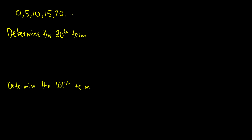So let's say we have a sequence that looks like 0, 5, 10, 15, 20, and it seems to be going up by 5 every single time. We're asked to determine the 20th term. Each one of these numbers is a term. So 0 is the first term, which we denote as t with a 1 underneath — t sub 1. The 5 is our second term, t sub 2. And this 20th value is going to be t sub 5, and we want to know what t sub 20 is.